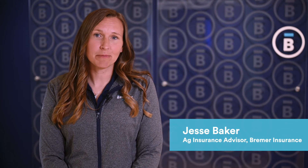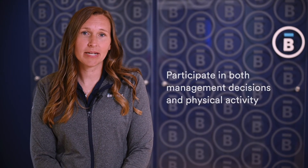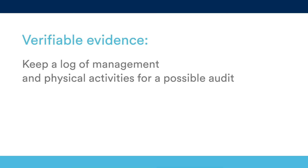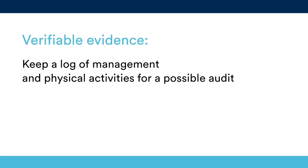The most common method to transfer APH is when the person taking over was involved in establishing the current operation. This involvement usually includes participating in both management decisions and the physical activities necessary to produce the crops. To qualify for this method, you will need verifiable evidence of two things: that you've participated in the management decisions, and that you have performed the physical activities necessary to produce the crops.